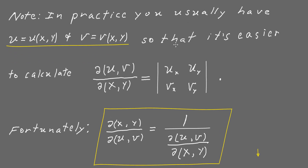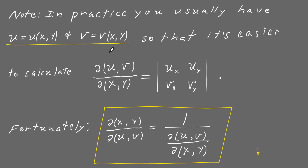In practice, what you usually have is u as a function of x and y and v as a function of x and y. So it's actually easier to calculate the Jacobian of uv with respect to xy. Fortunately, if you take the reciprocal of that Jacobian, you get the Jacobian you want — the one in the formula. In this Jacobian, the first row is partial of u with respect to x then partial of u with respect to y; the second row is partial of v with respect to x then partial of v with respect to y, and the bars represent the determinant.